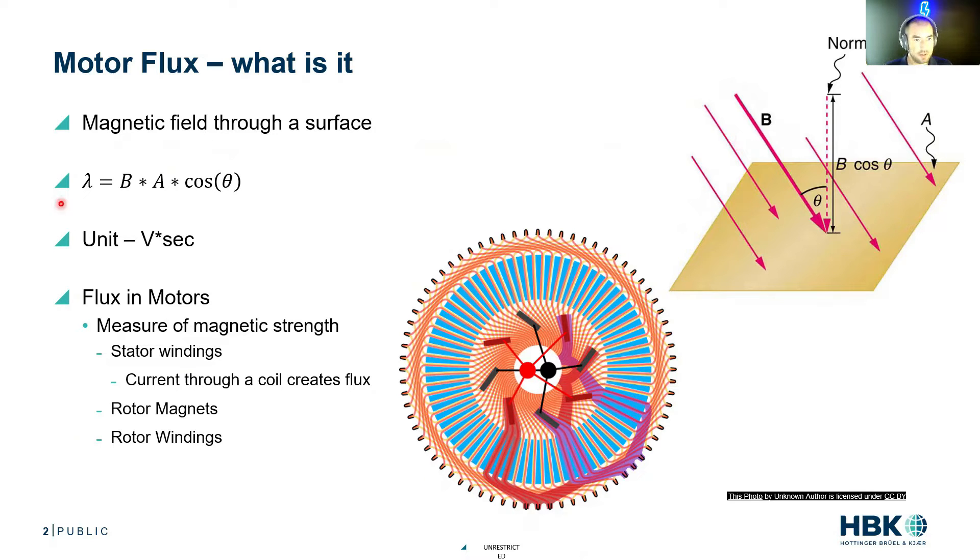That's basically our calculations for flux. Flux is the magnetic field times the area of interest times the cosine of the angle. We want that field line as normal to the surface.